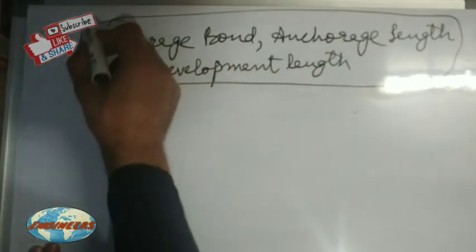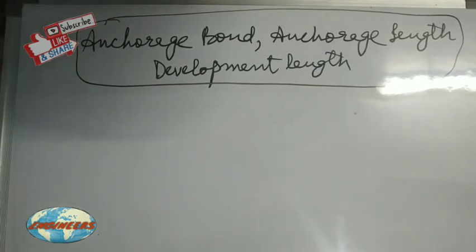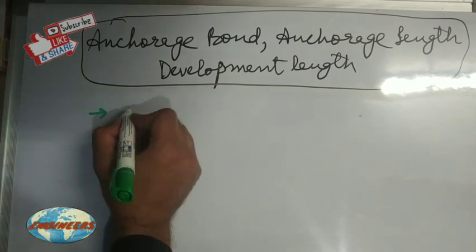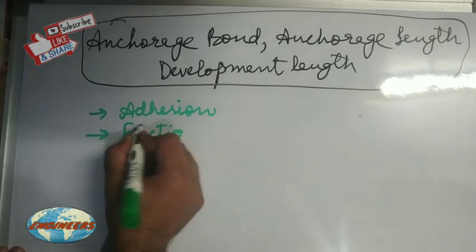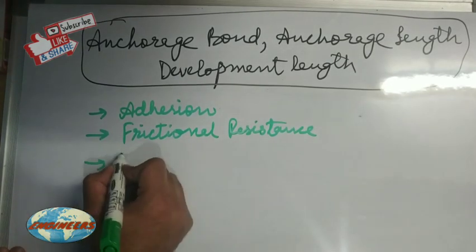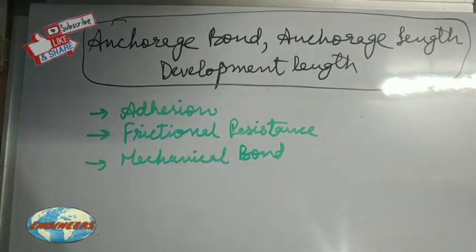Before discussing these topics, first of all we must know why and how the bond is developed between the steel and the concrete, as we are studying RCC. The bond between the steel and concrete is due to adhesion, frictional resistance, and it also acts as a mechanical bond.